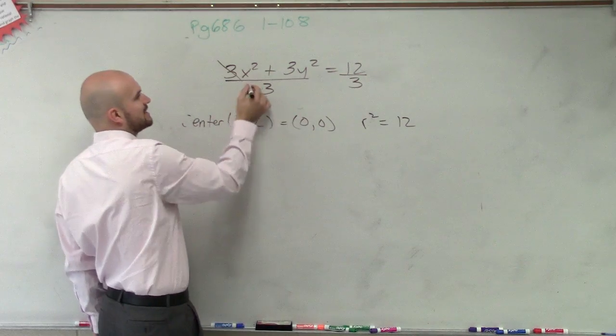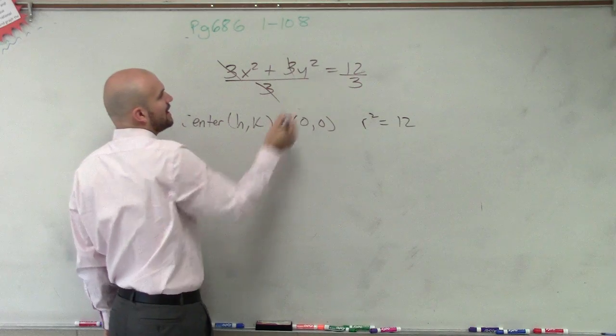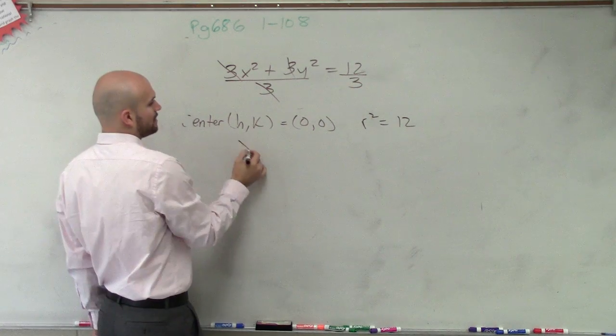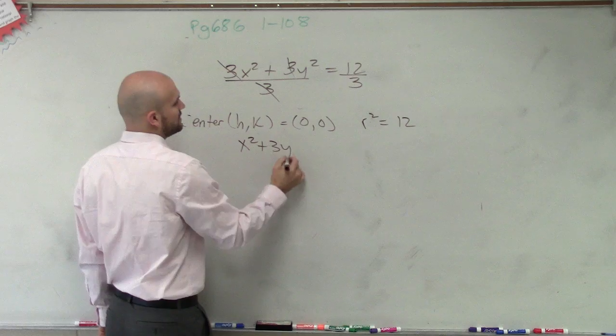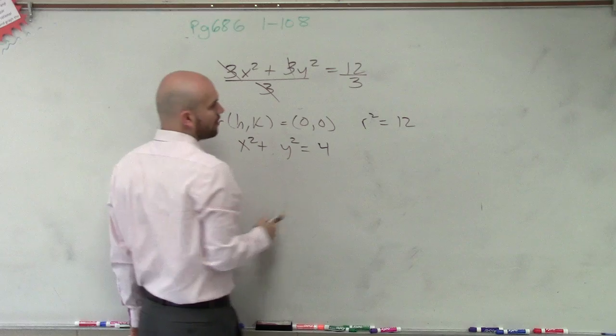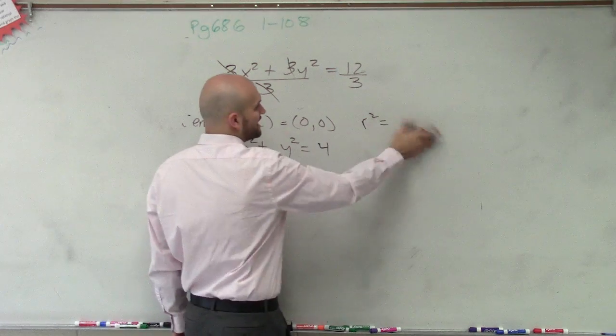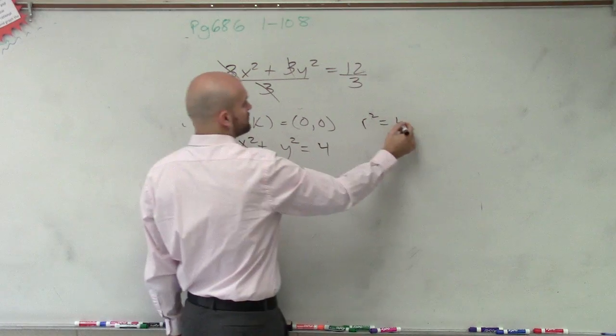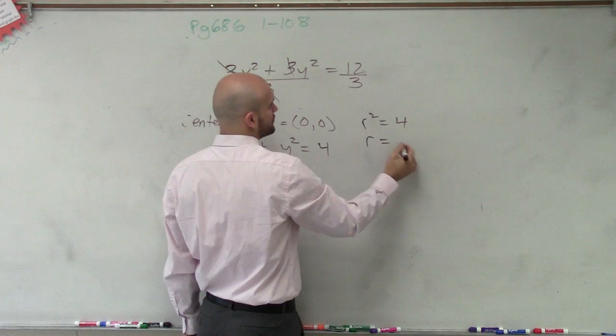Well, 3 divided by 3x, that divides to 1. 3 divided by 3y, that divides to 1. So therefore, I'm left with x squared plus y squared equals 12 divided by 3, which is 4. Now, we can say that r squared equals 4. So therefore, our radius equals 2.